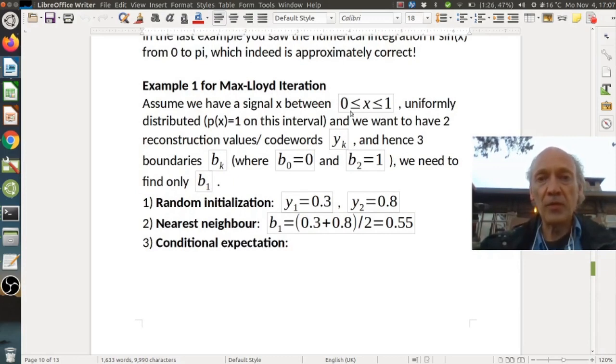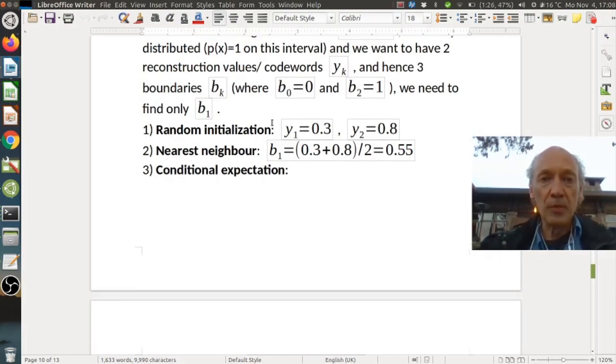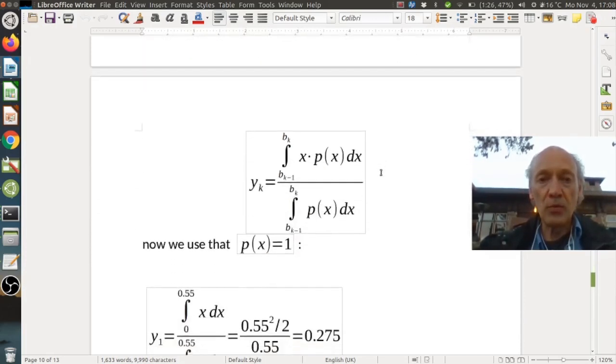Assume we have a signal x between 0 and 1, uniformly distributed, p(x) is 1 on this interval, and we want to have two reconstruction values or codewords y_k, and hence we need three boundaries. b_0 is 0, b_2 is 1, and we need to find b_1. So we start with some random initialization. We have the two reconstruction values. Choose them as 0.3 and 0.8, and then use the nearest neighbor rule. We get the b_1 value as the middle between them is 0.55, and then we can compute the conditional expectation.